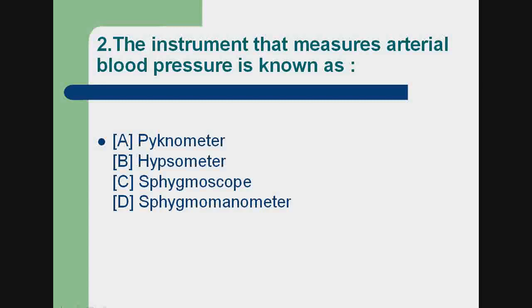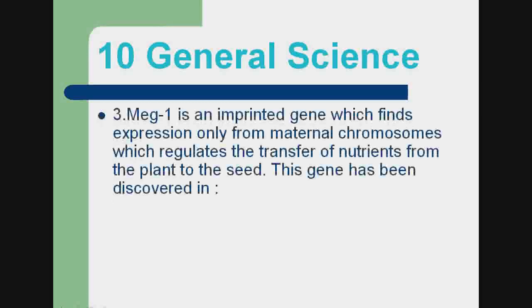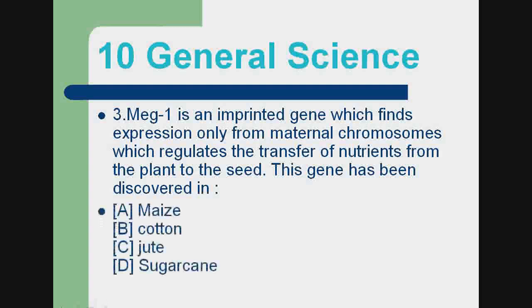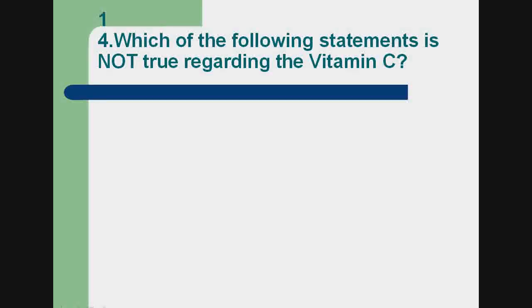d) sphygmomanometer. Correct answer: d) sphygmomanometer. Question 3: MEG1 is an imprinted gene which finds expression only from maternal chromosomes, which regulates the transfer of nutrients from the plant to the seed. This gene has been discovered in: a) maize, b) cotton, c) jute, d) sugarcane. Correct answer: a) maize.